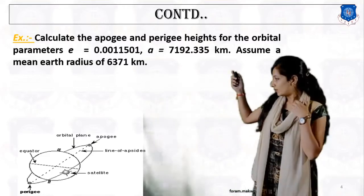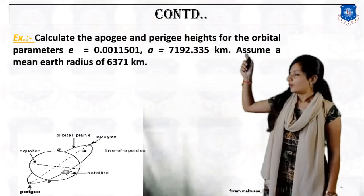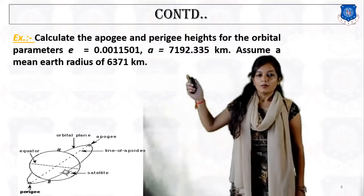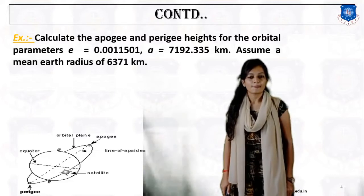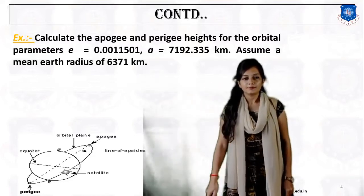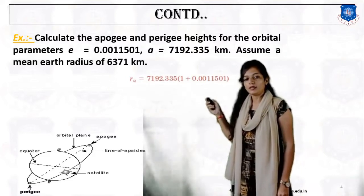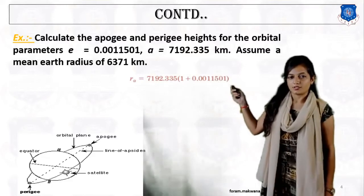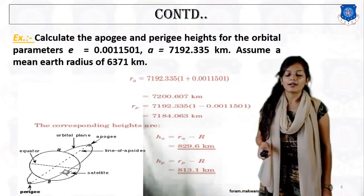The example is: calculate the radius of apogee and perigee, and from that calculate the height of apogee and perigee for the given orbital parameters. Eccentricity is given as 0.001501, the semi-major axis is given as 7192.35 km, and the radius of the earth is fixed at 6371 km. We know the formula for radius of apogee: RA equals A times (1 plus E). With the values of semi-major axis and eccentricity, we can calculate the radius of apogee and similarly the radius of perigee, from which we calculate the heights.